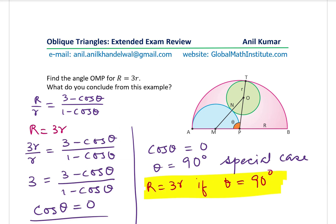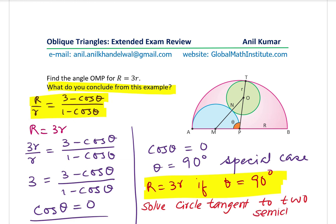Now you know the general solution, so any equation based on two semicircles with a tangential circle can be solved. The most important thing to infer from this example is how to solve a circle tangent to two semicircles. Feel free to write your comments, share your views, and if you like and subscribe to my videos, that'd be great. Thanks for your time and all the best.